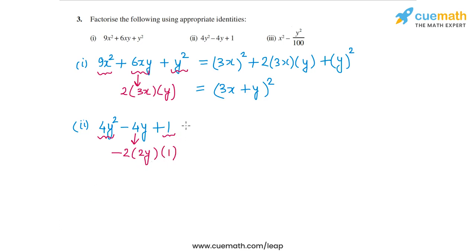I can write this expression as 2y whole square minus 2 times 2y times 1 plus 1 square. So this is of the form a square minus 2ab plus b square. So this will be a minus b whole square, or 2y minus 1 whole square.